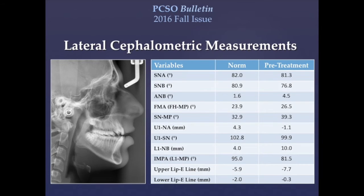On the lateral ceph tracing, the ANB of 4.5 shows a Class 2 skeletal relationship, while the FMA and SN to MP show a hyperdivergent pattern. The upper incisors are retruded and retroclined, whereas the lower incisors are protruded. The IMPA indicates retroclined lower incisors, partly due to the high-angle skeletal pattern. Upper lip to E-line shows a flat upper lip.